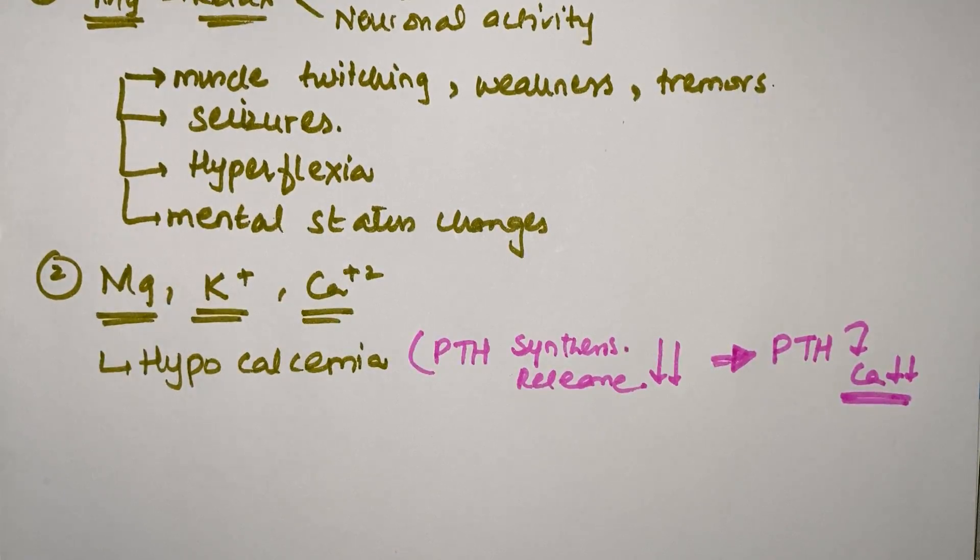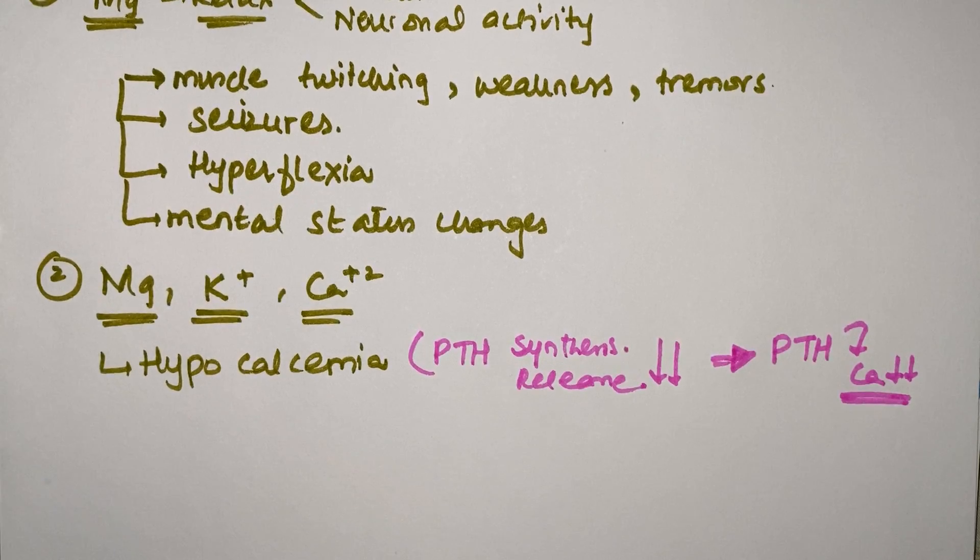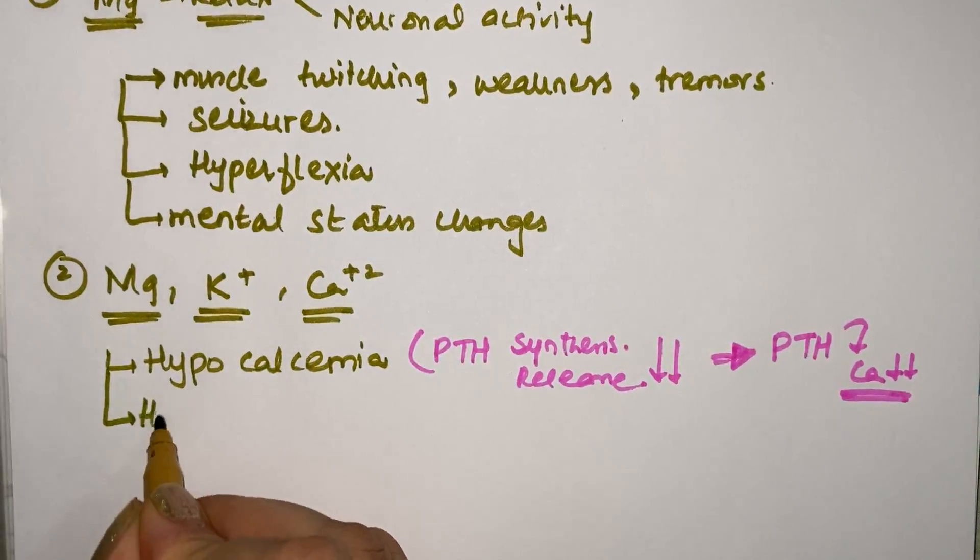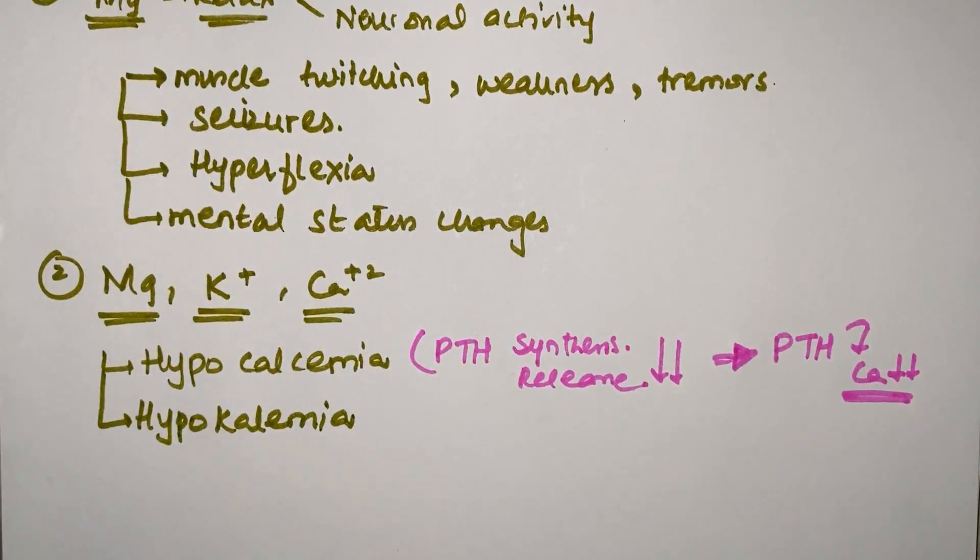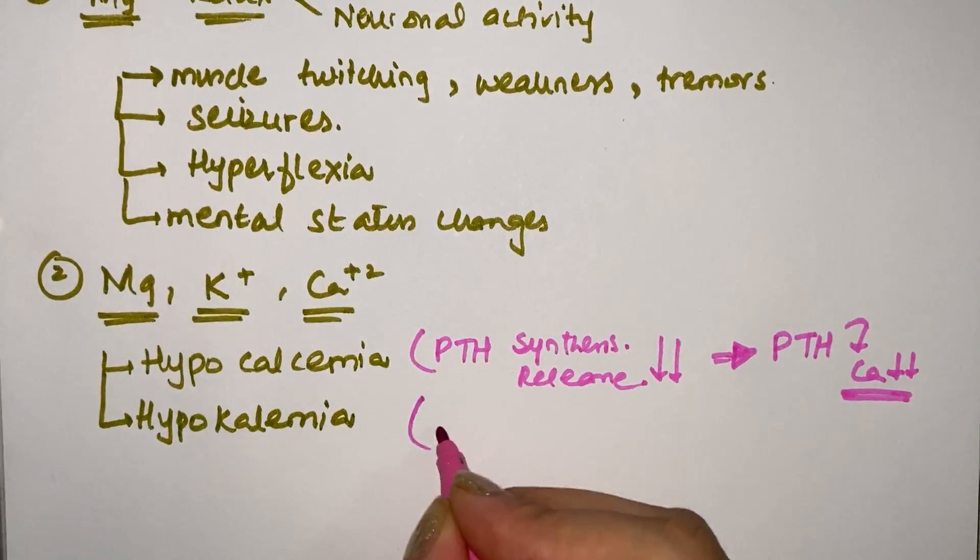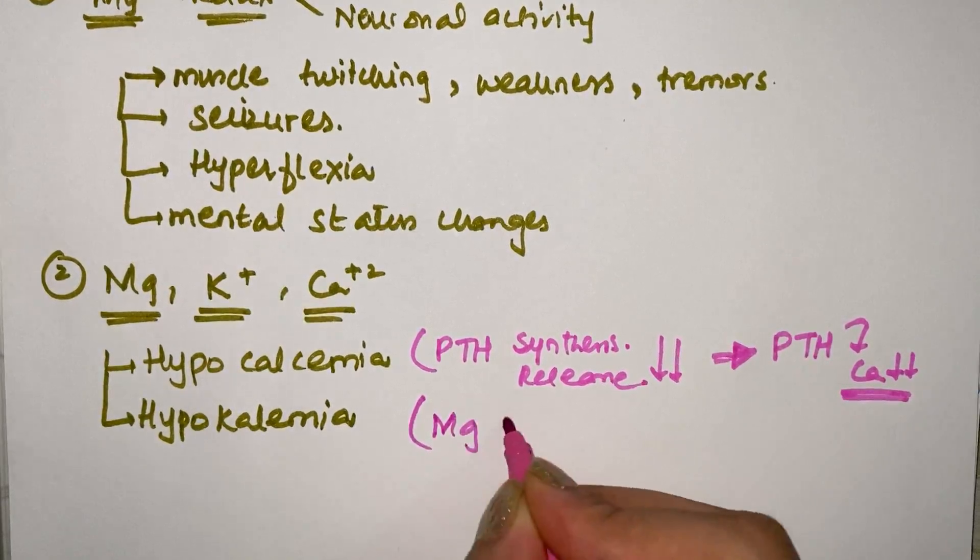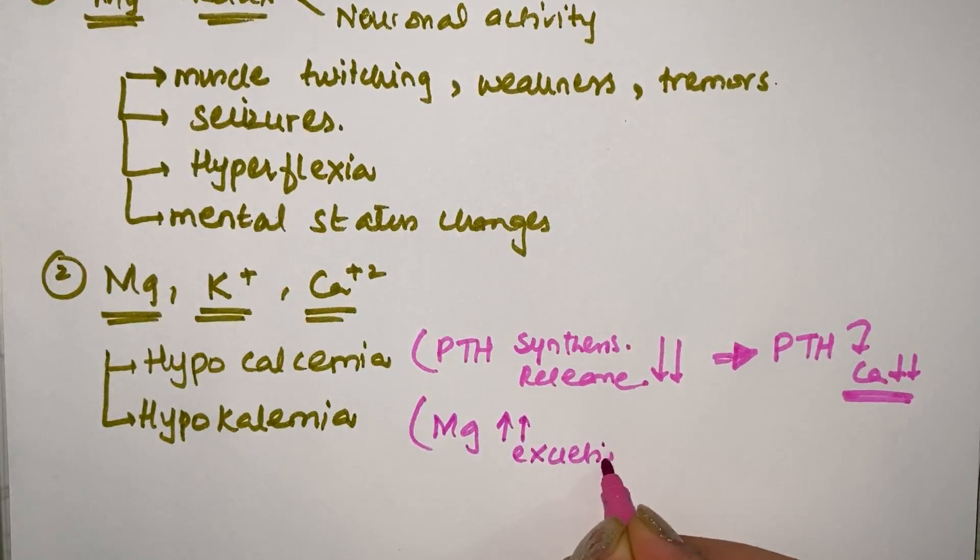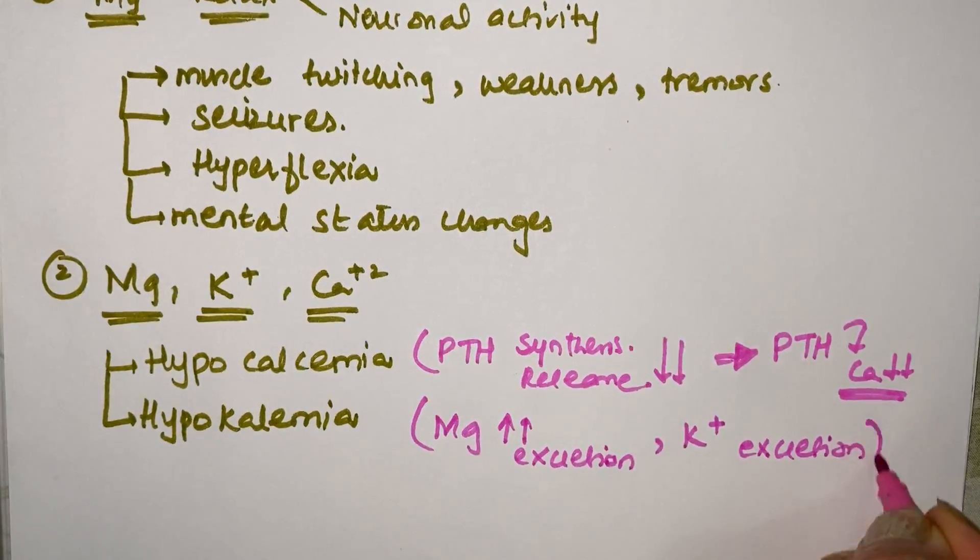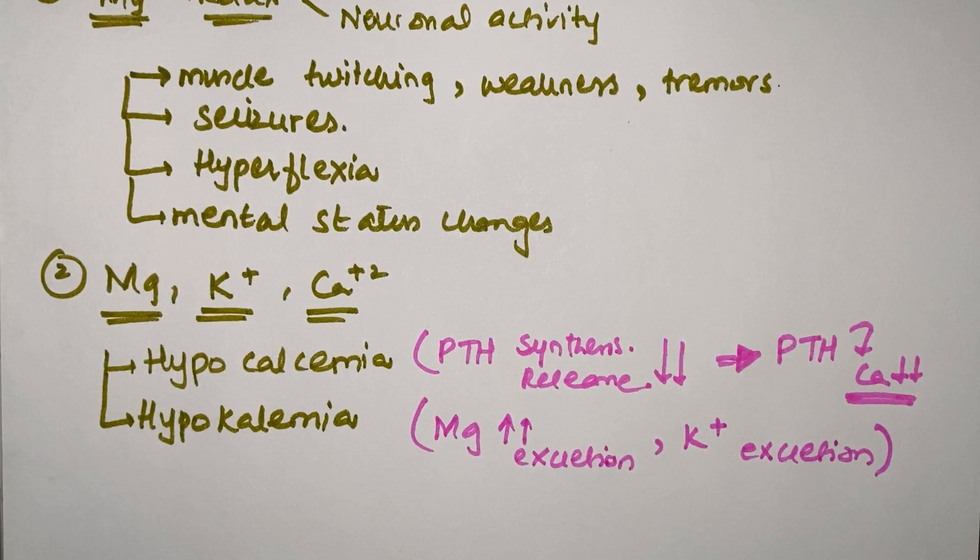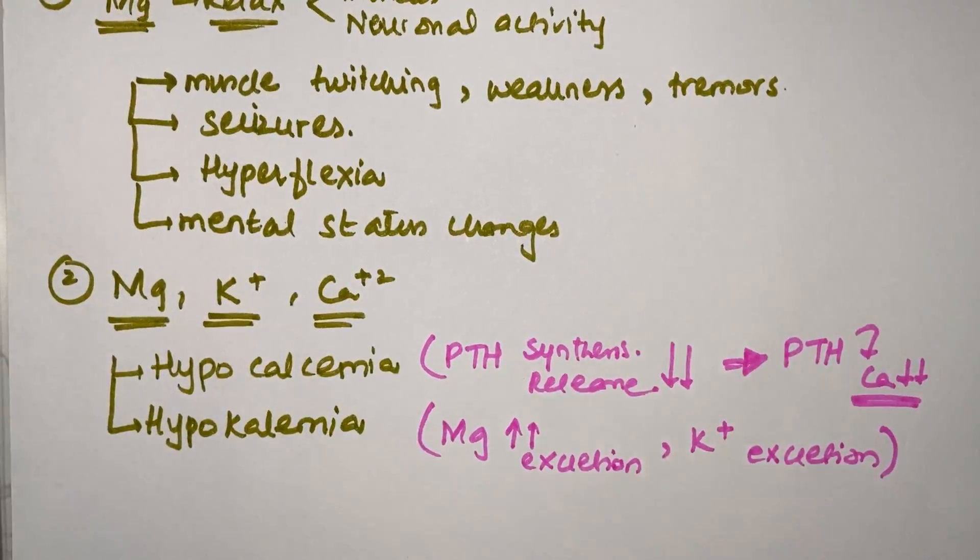I have explained this mechanism in the introduction of magnesium video. Moving on to hypokalemia: when there is increased magnesium excretion, it is also accompanied by increased potassium excretion. So it will also cause hypokalemia. This is important.